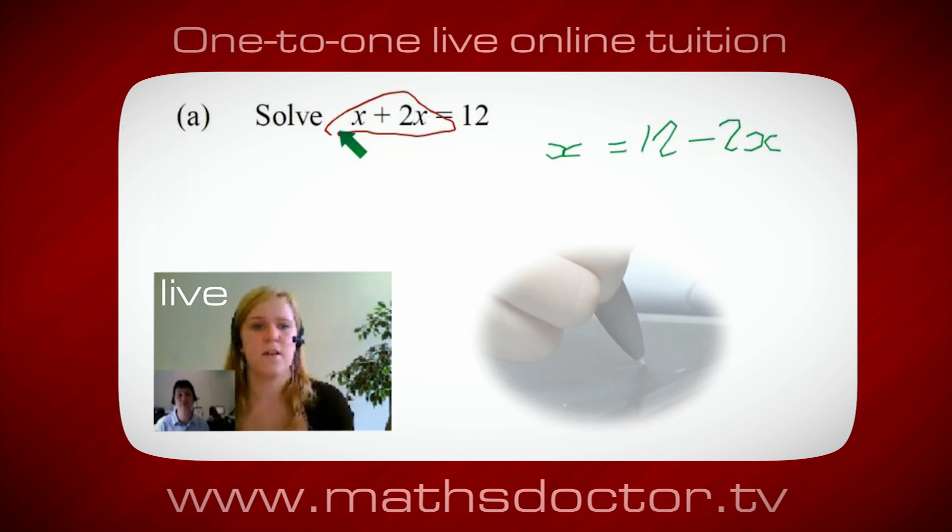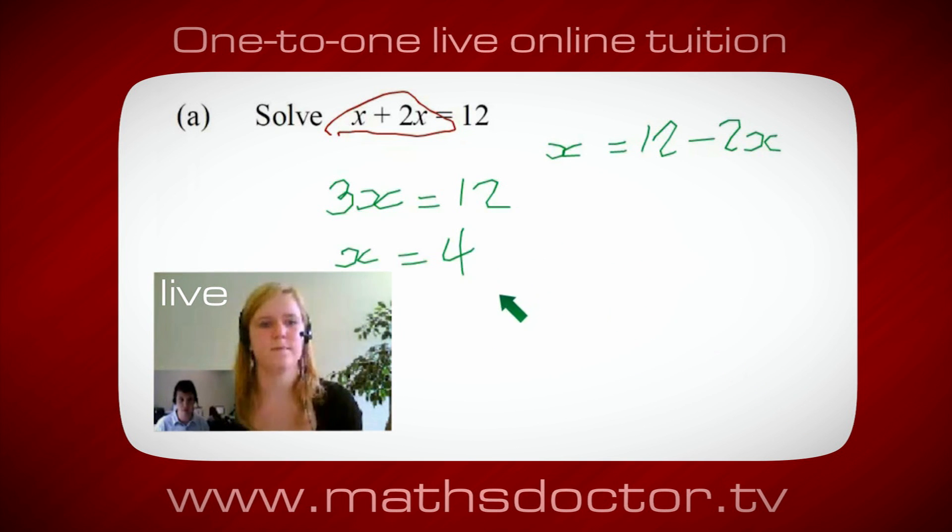Okay, it's 3x isn't it? Yeah, absolutely. So 3x equals 12. Oh, and so x equals 4. Brilliant, spot on, well done.